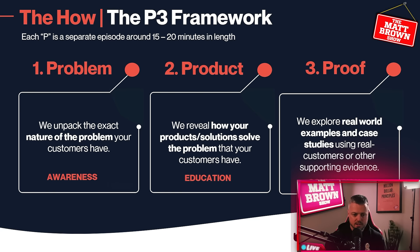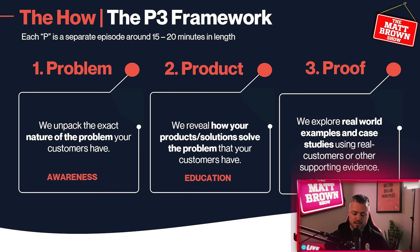How do we produce all of this? What's the process we use? We use something called the P3 framework. Whether you're doing a full digital TV show — which includes three episodes — or a once-off interview, this process is the same. It's about the Problem, the Product, and the Proof. In the Problem phase, we unpack the exact nature of the problem your customers have — this is about awareness. In Product, we educate the markets about how your products and solutions solve that problem. And Proof is about providing real world examples and case studies using real customers or other supporting evidence — this is about conversion.